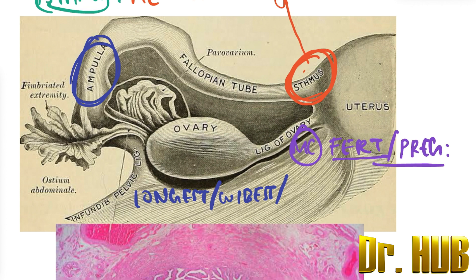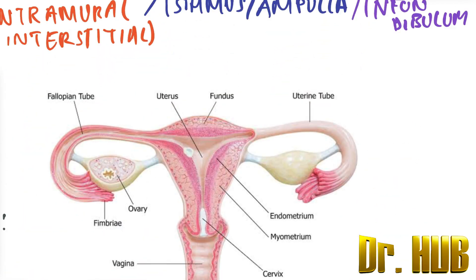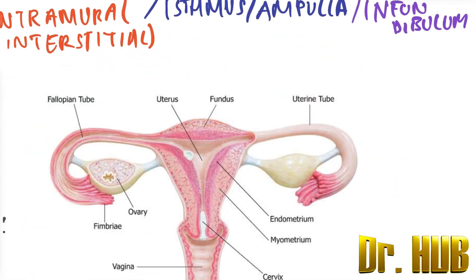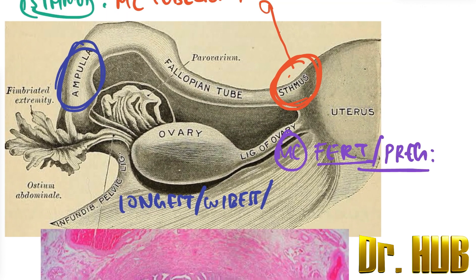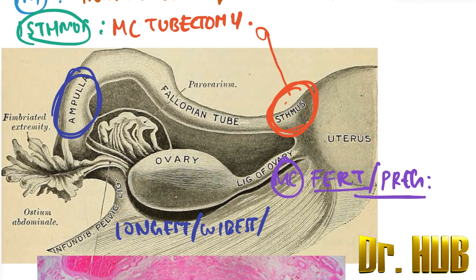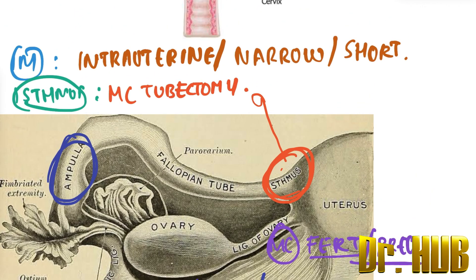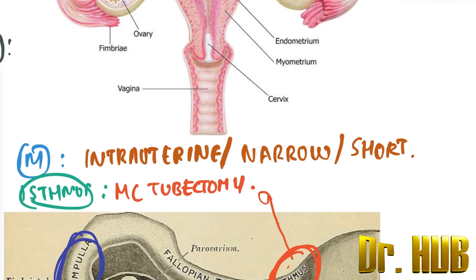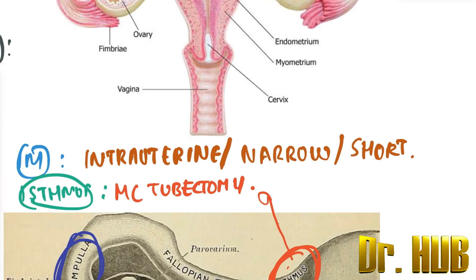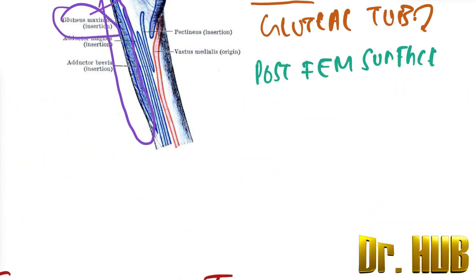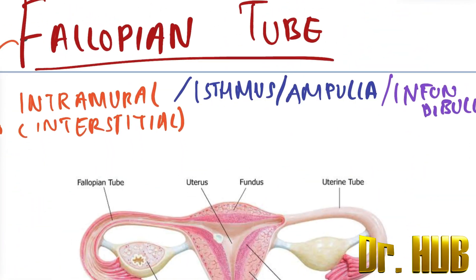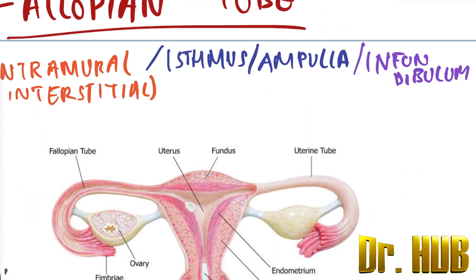Then we look at the infundibulum. So to summarize, the parts of the fallopian tube are: the intramural, the isthmus, the ampulla, and the infundibulum.